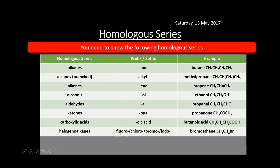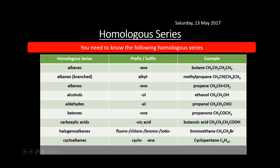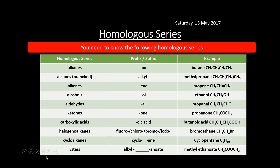Halogenoalkanes have a prefix — fluoro, chloro, bromo, or iodo. So for example, bromoethane is CH3CH2Br, and chloro gives chloromethane, chloroethane, etc. Cycloalkanes start with cyclo- and end in -ane, so for example cyclopentane, C5H10. Esters start with an alkyl group and end in -anoate; for example, methyl ethanoate. They're very similar to a carboxylic acid, except instead of the H, we have an alkyl group at the end.